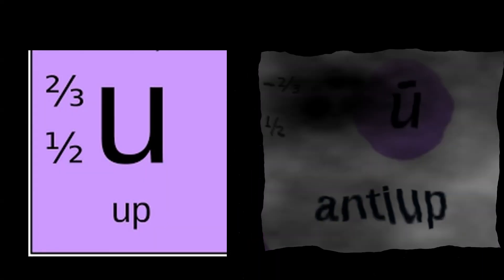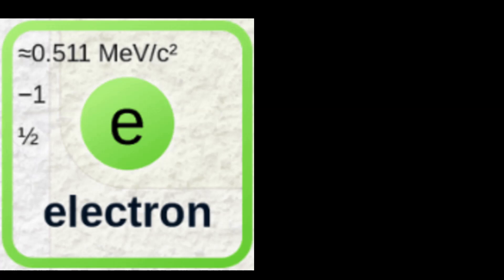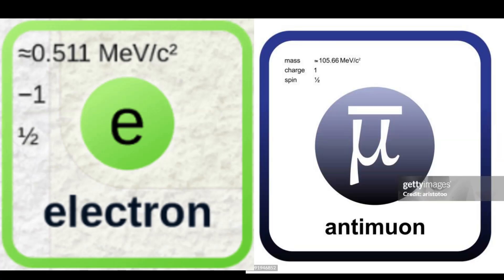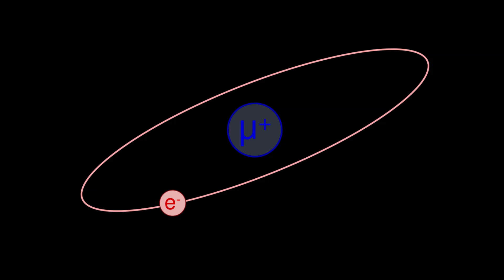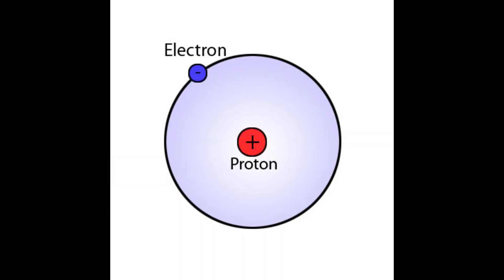But if you take an electron and an anti-muon, they won't annihilate. The interaction between them would not be much different to an electron interacting with a proton for example.